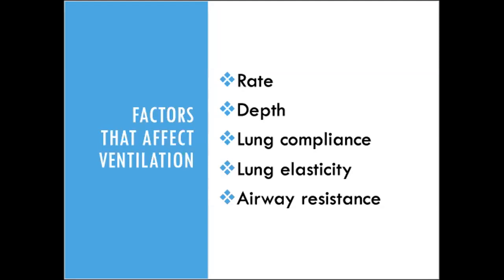Lung elasticity refers to the recoil — the tendency of elastin fibers to return to their original position after being stretched, like letting go of a rubber band. Alveoli that have been overstretched with emphysema may lose their elastic recoil over time. The loss of elasticity allows the lungs to inflate easily but inhibits deflation, leaving stale trapped air in the alveoli. Airway resistance is the resistance of airflow within the airways — the larger the diameter of the airway, the easier air flows through it.